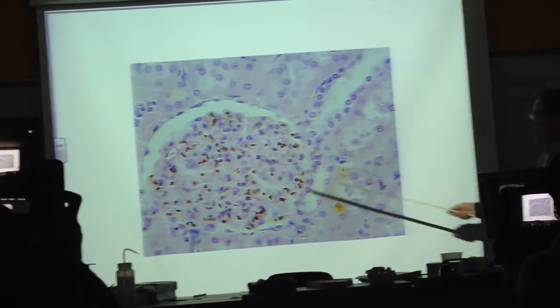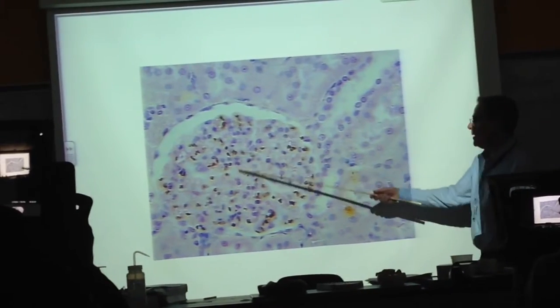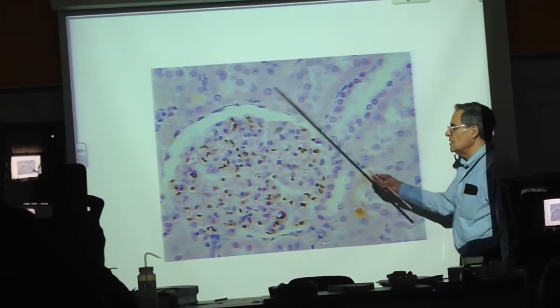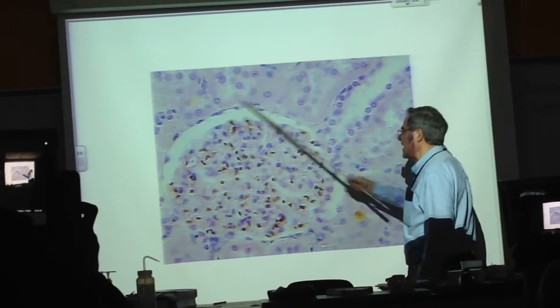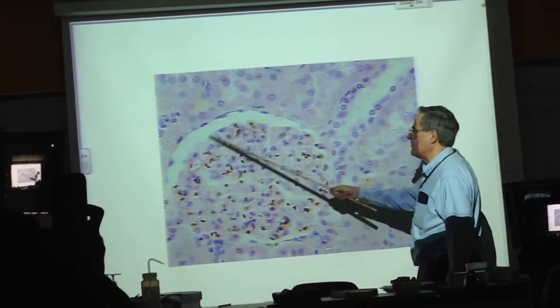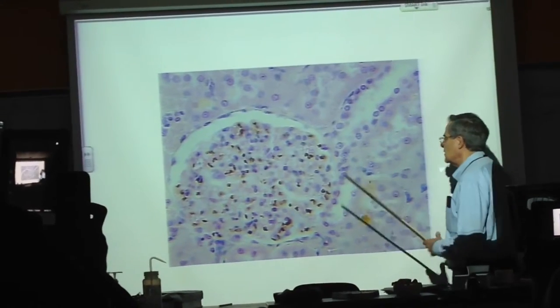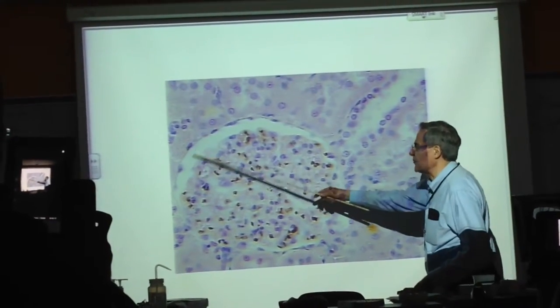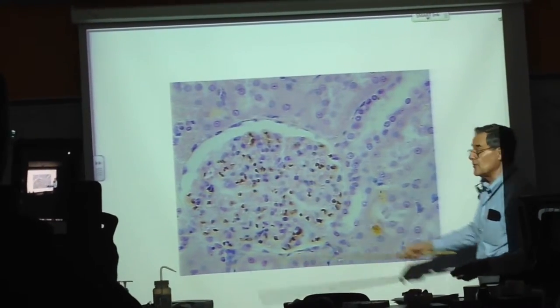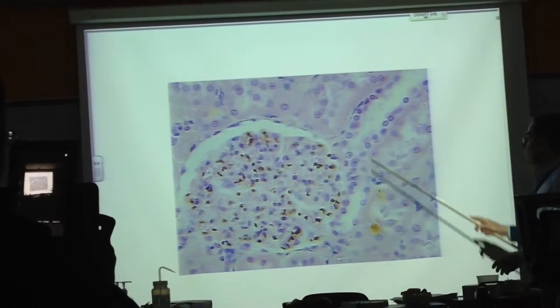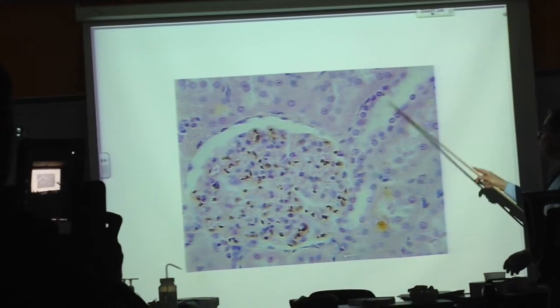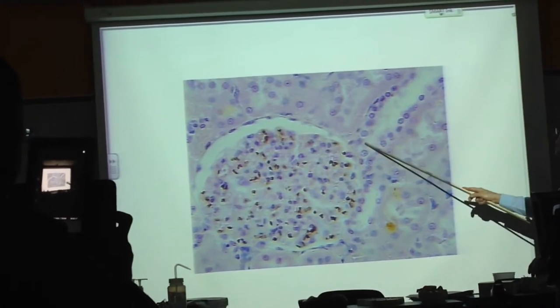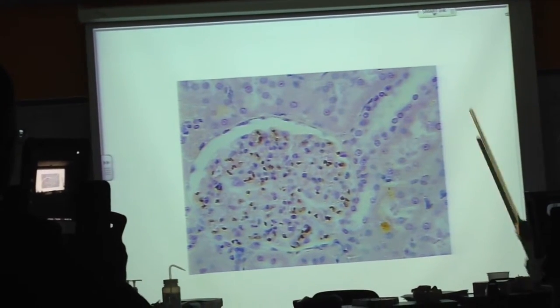Again, this is the glomerular capillaries, this is the Bowman's capsule, here is the cavity of it. Again, it is lined with simple squamous epithelium — you can also see it in the models — and here is the proximal convoluted tubule coming out of the Bowman's capsule.